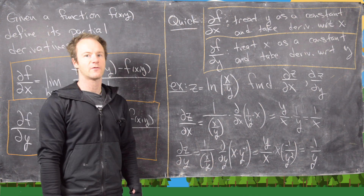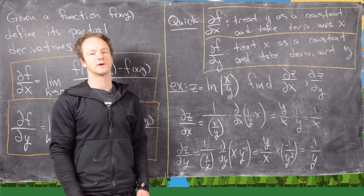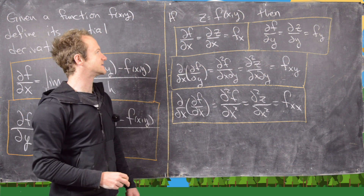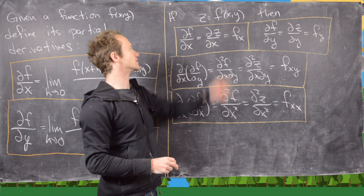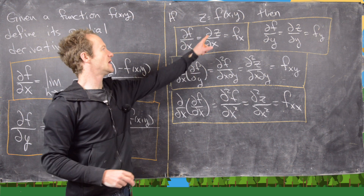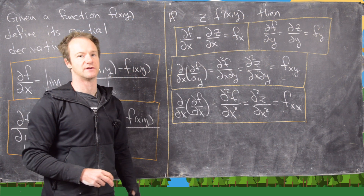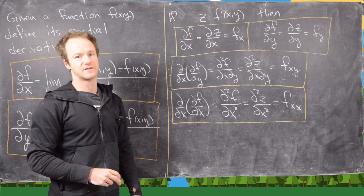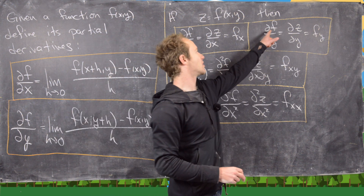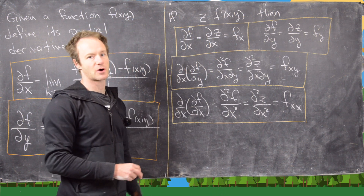So we've taken those two partial derivatives. Before finishing this video, I want to introduce some different notation. If z equals f(x, y), then the partial of f with respect to x can be written as ∂f/∂x, ∂z/∂x, or f subscript x — three common ways. Similarly for the partial with respect to y: ∂f/∂y, ∂z/∂y, or f sub y. And then we also have second partial derivatives.